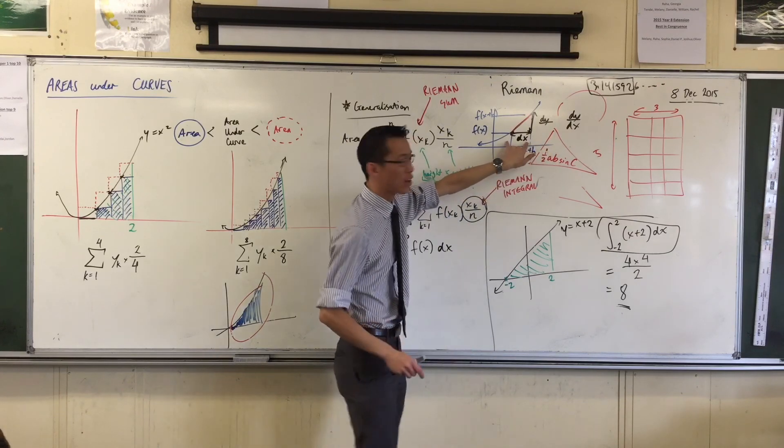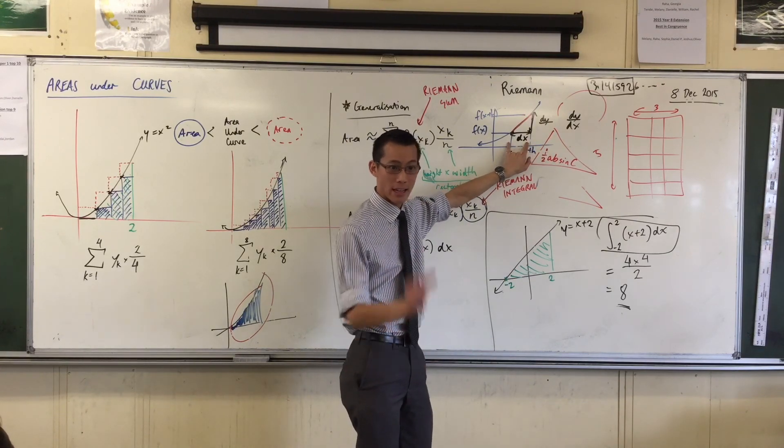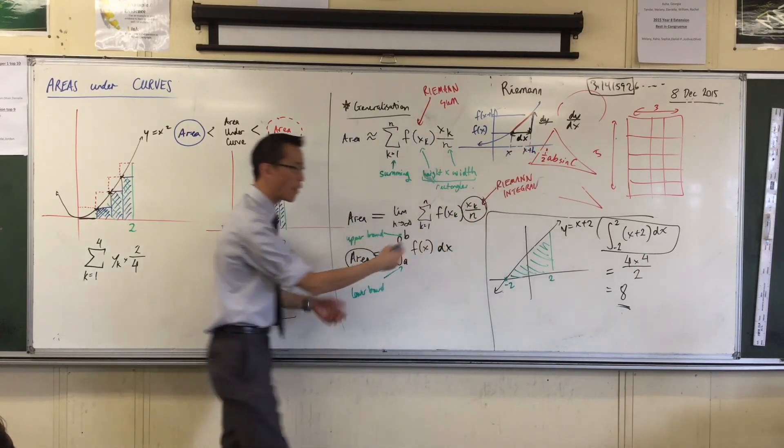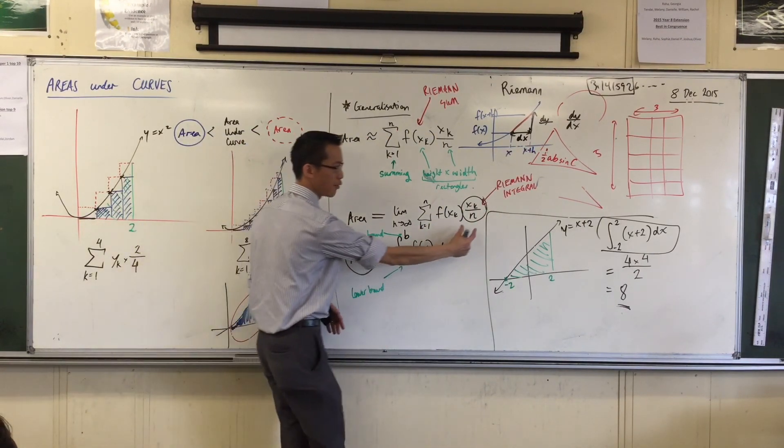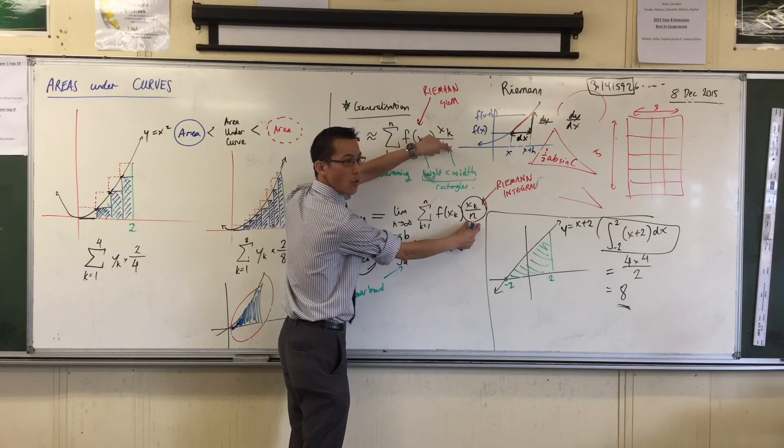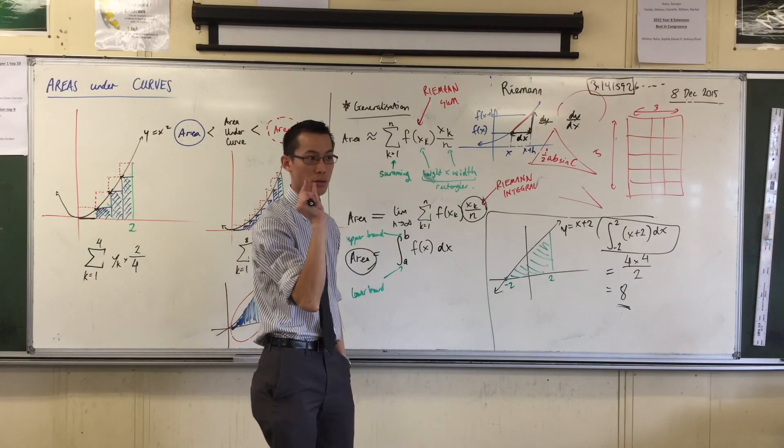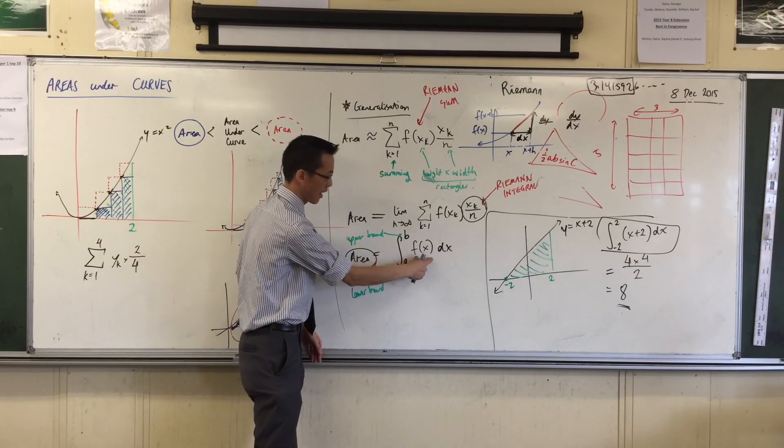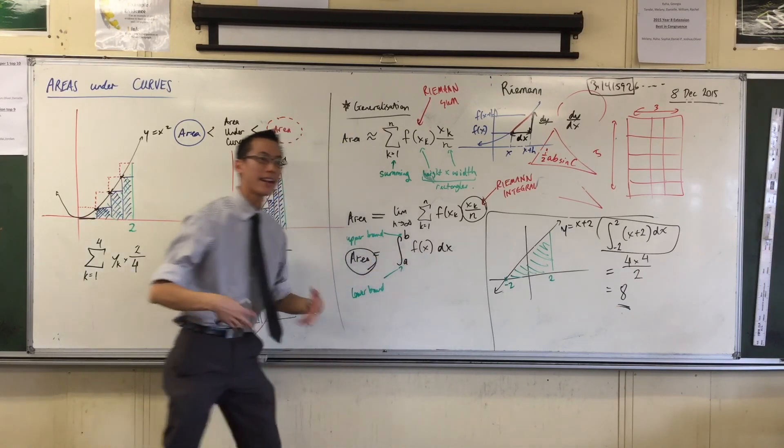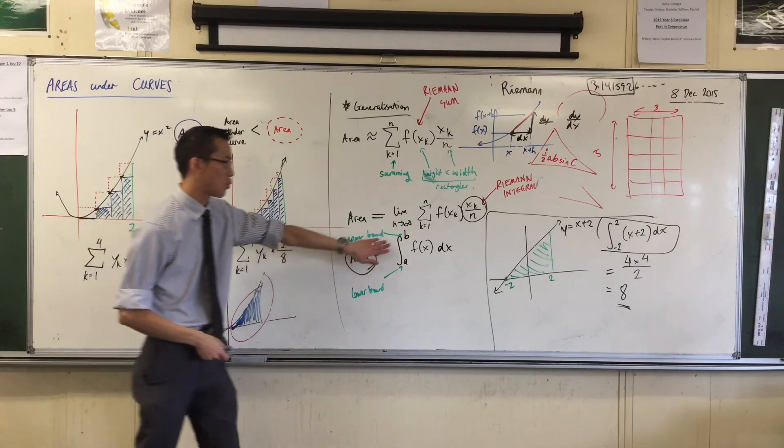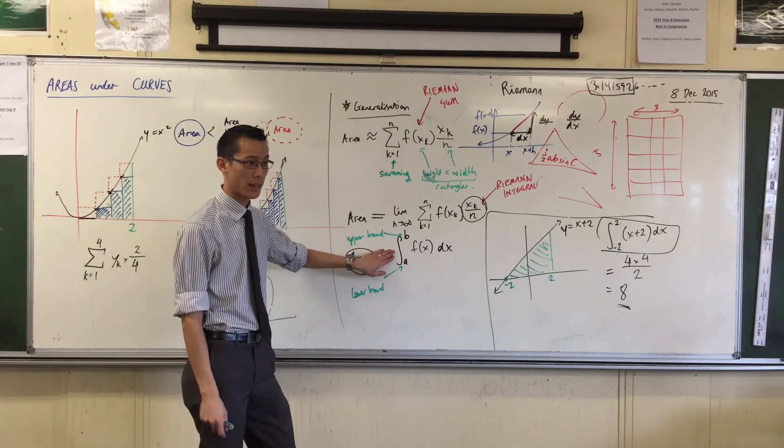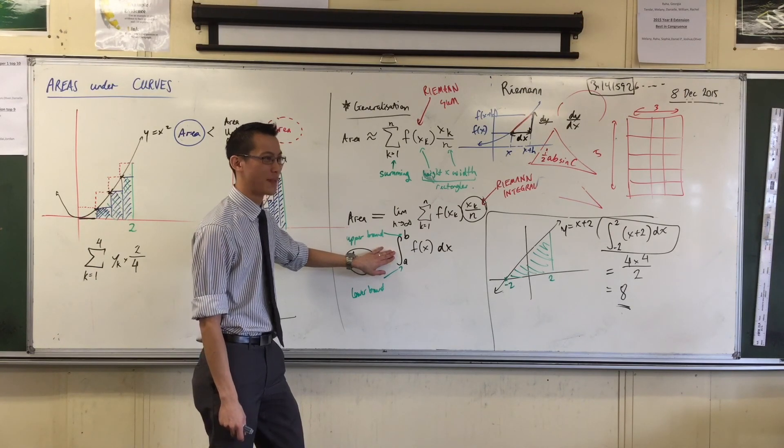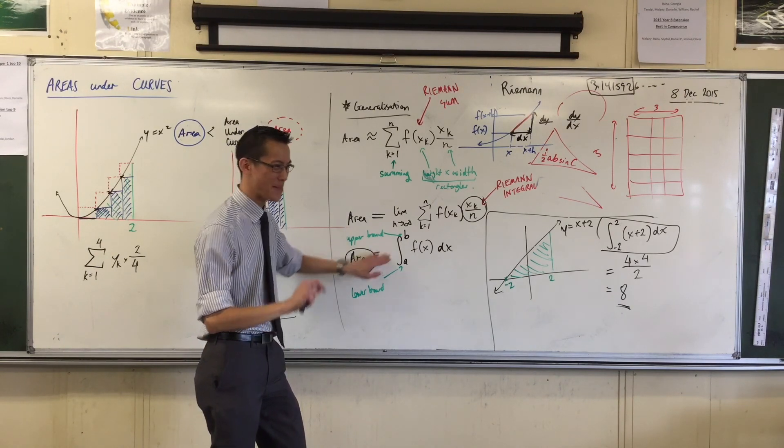Now, because we use that to indicate a little change in x, a little width, we borrow that language to substitute for this and this, which are very, very little widths. So there's my little width there and there's my height. Height times little width and I'm adding up this series of things. That's why it's a sum. You don't have to do anything with this? Or we will, believe me, we will. Baby steps.